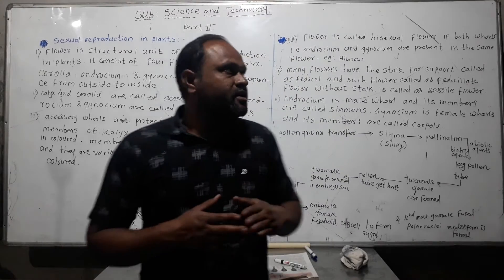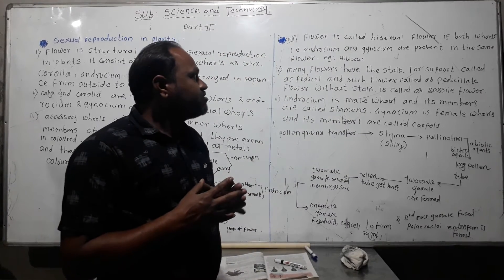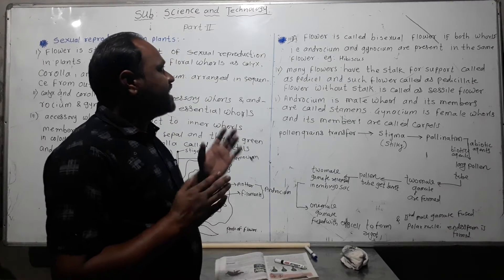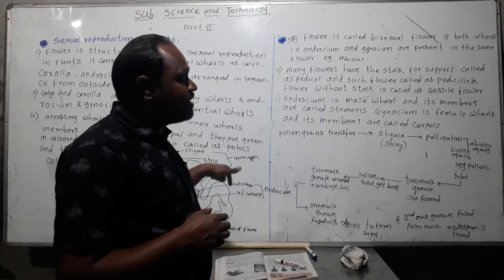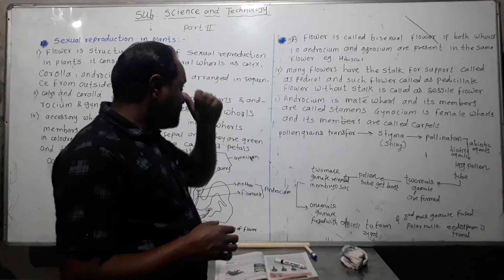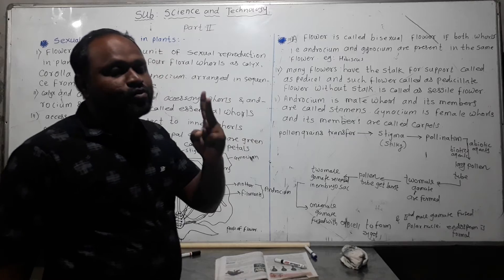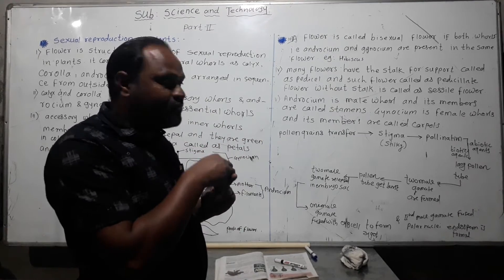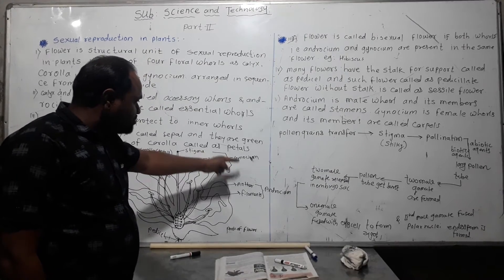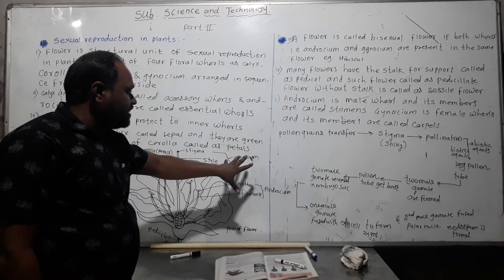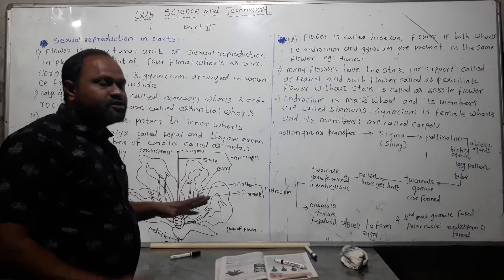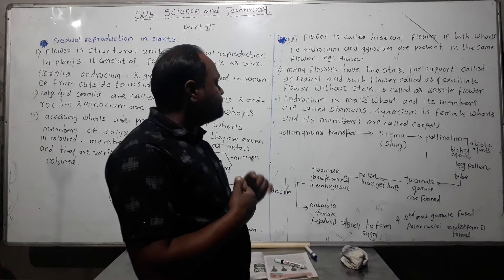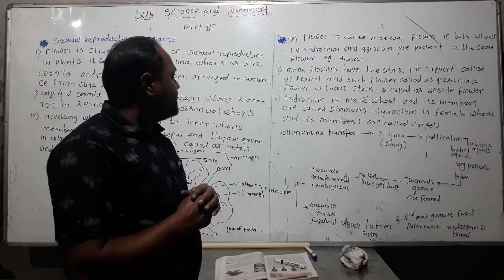When both androecium and gynoecium are present on the same flower, it is called a bisexual flower. In hibiscus, both whorls are present in the same flower, so it is called a bisexual flower. An example of a bisexual flower is hibiscus.